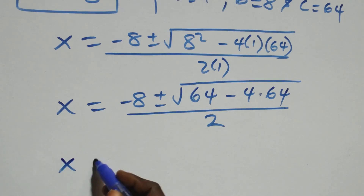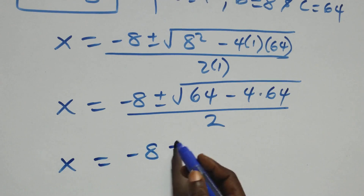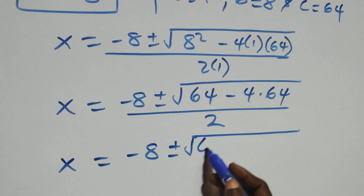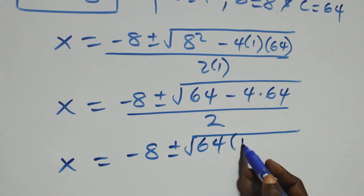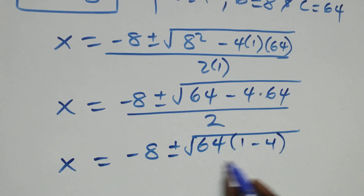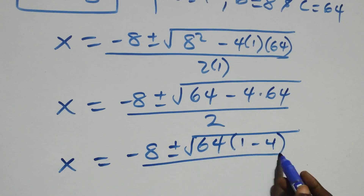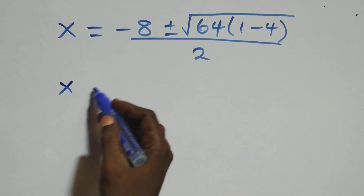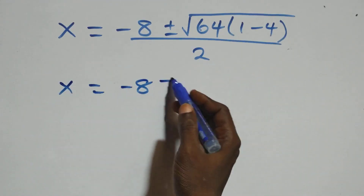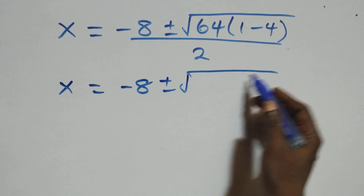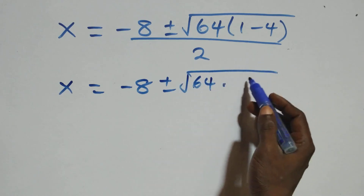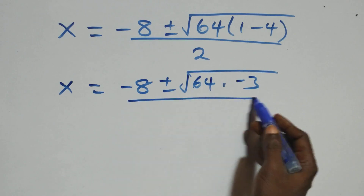This becomes x equals to minus 8 plus or minus square root of 64 times (1 minus 4), that's minus 3, all over 2.